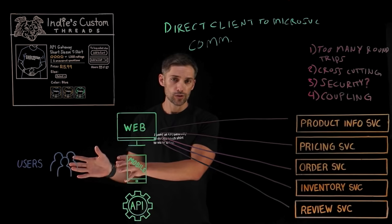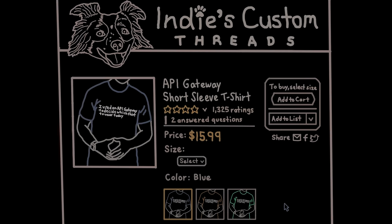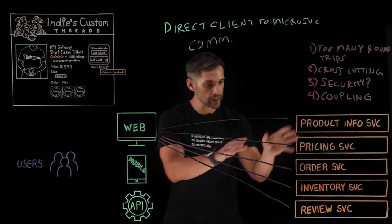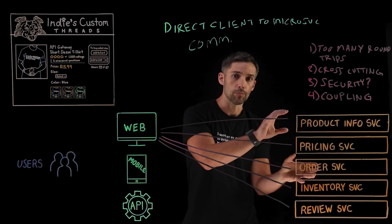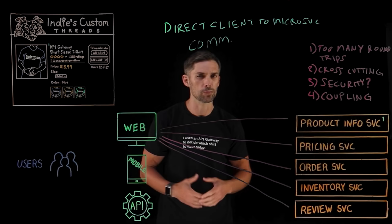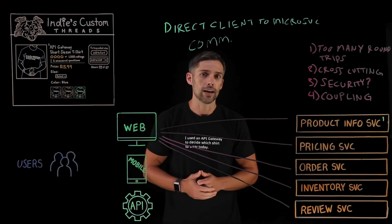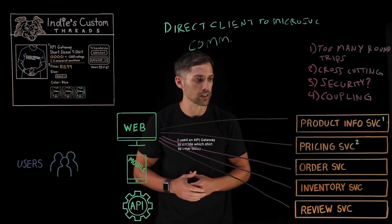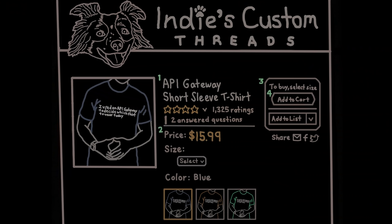Now let's look at the actual product detail UI. There's a lot of different functionality broken down into microservices — originally a monolithic application that we've segmented into different services. The first is the product info service: color, size, and so on. Then we have the pricing service, order service for purchase history, the inventory service, the review service, and more. This is just a handful — we could have many more microservices.